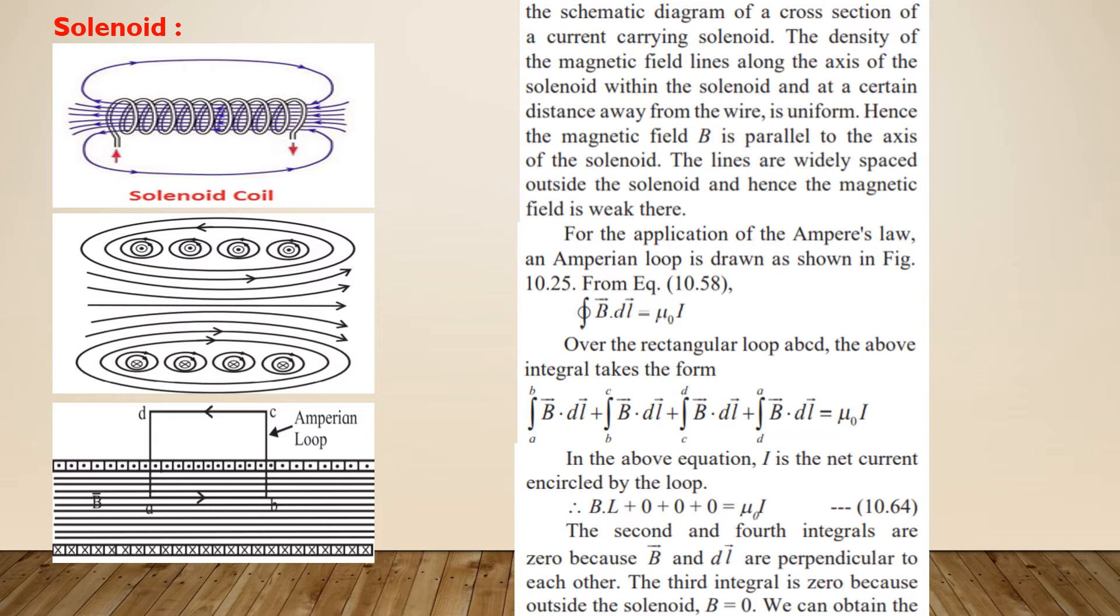The lines are widely spaced outside indicating that the field is weak there. In order to determine the field inside, let us consider a rectangular amperian loop ABCD as shown in the third diagram.